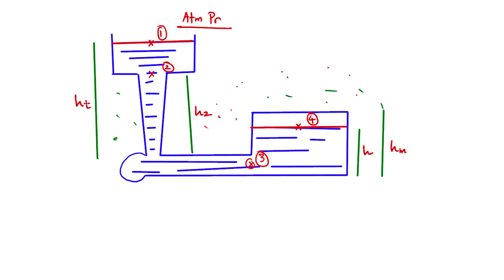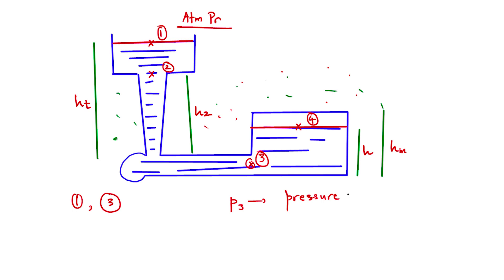We apply Bernoulli's equation between points one and three, as we did in the previous problem. However, here at point three we are going to have some gauge pressure — gauge pressure means the pressure measured during the process. At point three we are going to have a gauge pressure value which I call P3.